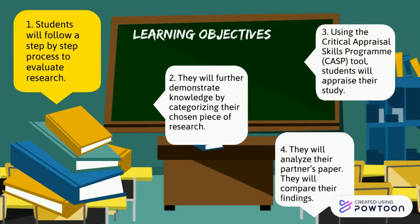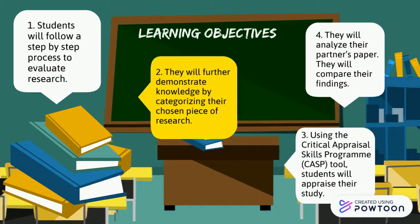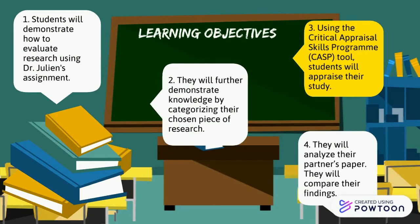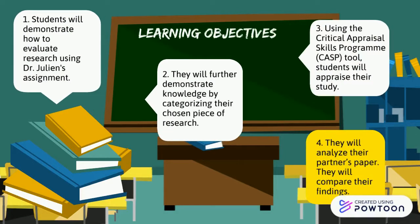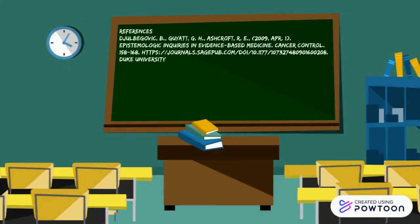These are your learner objectives. First, you'll evaluate a piece of research — we'll detail how later. Next, you'll show learning by selecting a study and determining what type of research it is. Then you'll appraise your chosen research using the CASP tool. Fourth, you will analyze your partner's paper and compare your findings. To fight boredom, let's switch formats.